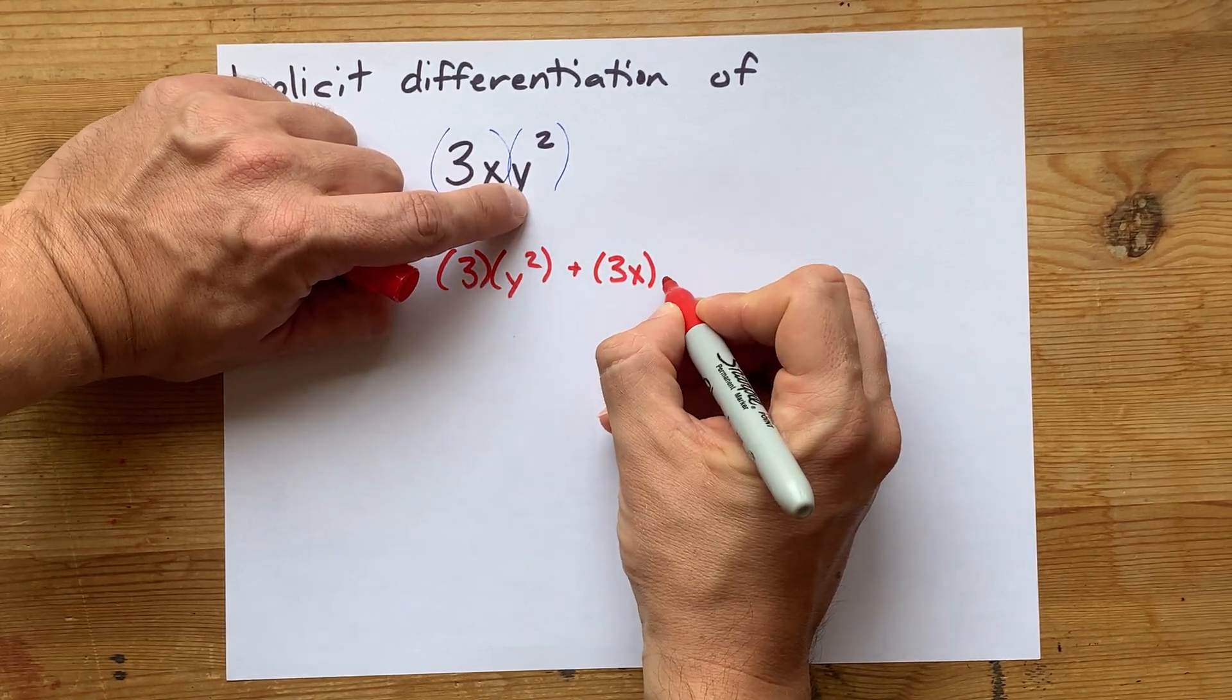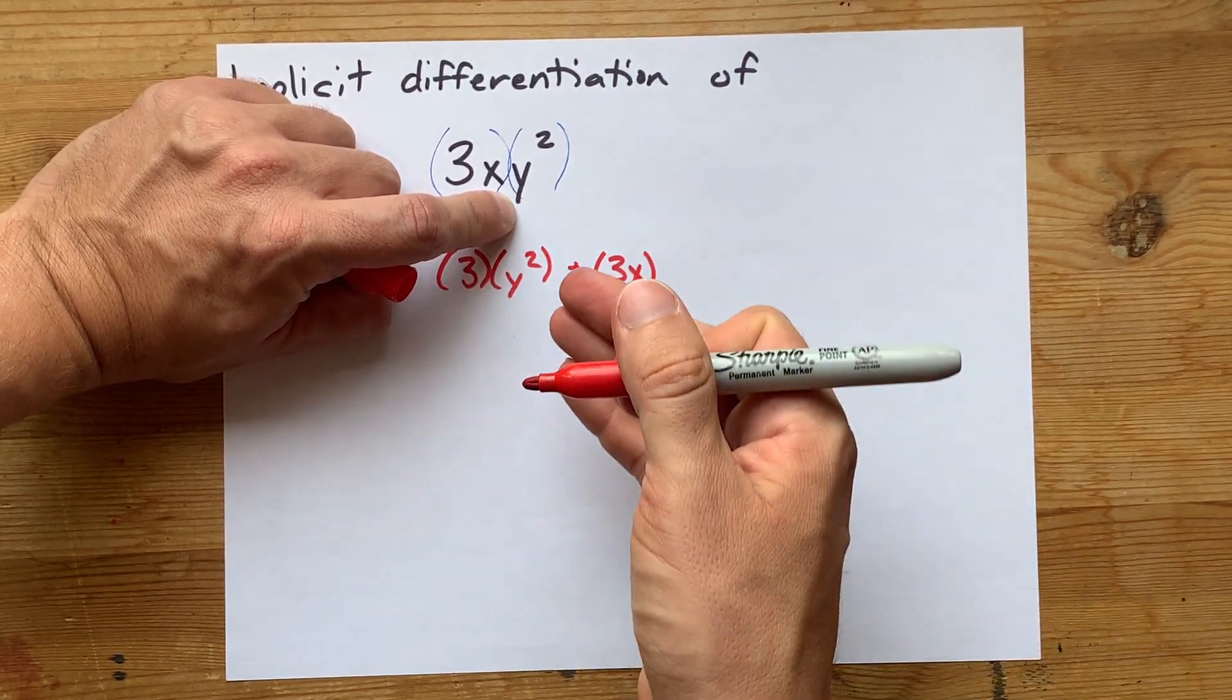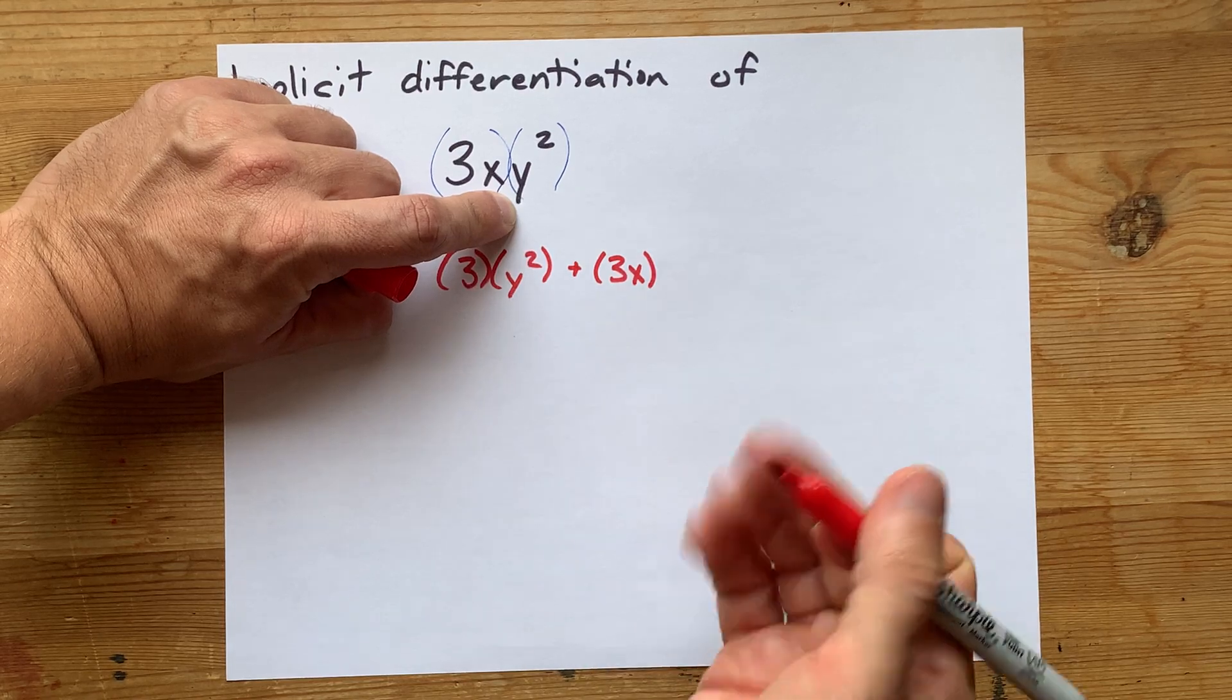Now, what's the derivative of y squared? Well, y is a function of x. So this is more of chain rule than anything else.